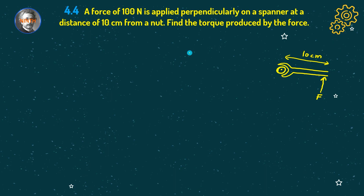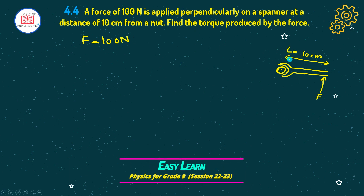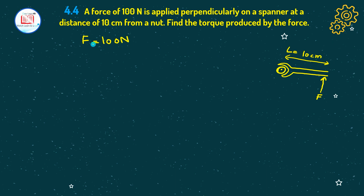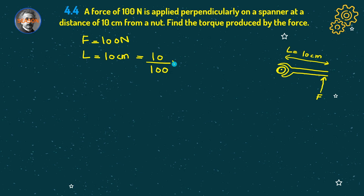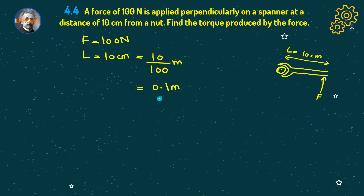We write down: F is equal to 100 newton. Distance is given, and in the case of torque we represent the distance by moment arm, so L is equal to 10 cm. Since the distance is given in cm, we have to convert it to meters by dividing by 100. So L equals 0.1 meters.